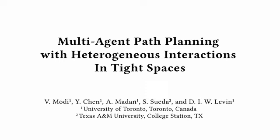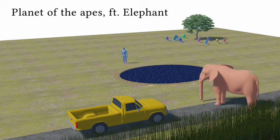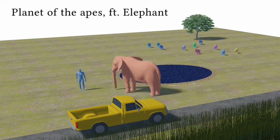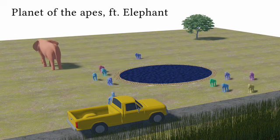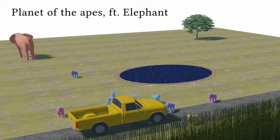We present a new method for multi-agent path planning through tightly constrained environments. Our method solves the global path planning problem through complex environments and also resolves all local collisions between agents in the scene while maintaining smooth trajectories.